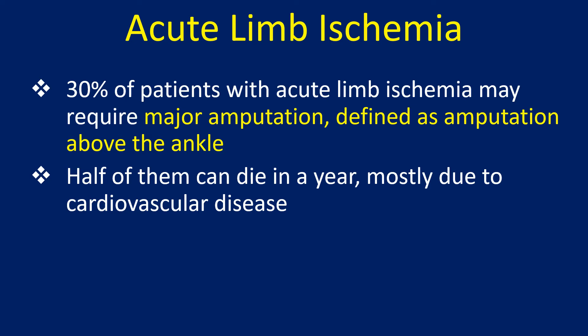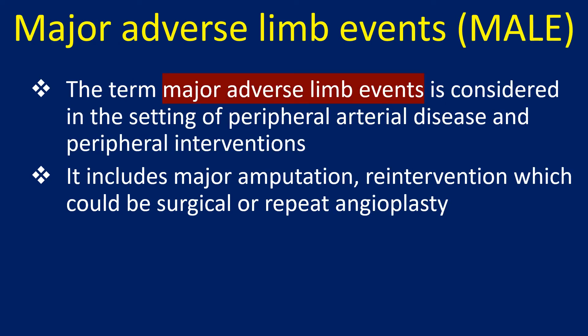30% of patients with acute limb ischemia may require major amputation, defined as amputation above the ankle. Half of them can die within a year, mostly due to cardiovascular disease. The term major adverse limb events (MALE) is considered in the setting of peripheral arterial disease and peripheral interventions, and includes major amputation and re-intervention, which could be surgical or repeat angioplasty.